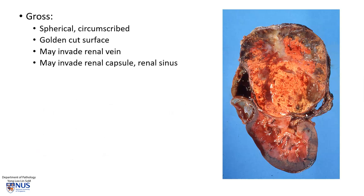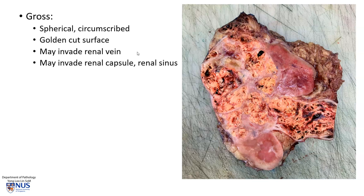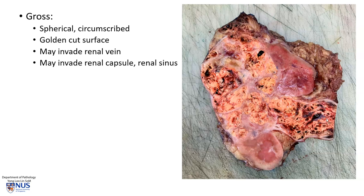Grossly, these tumors tend to be relatively well-circumscribed and rounded or spherical, and they have a very beautiful golden appearing cut surface. This correlates with the microscopic appearance we saw earlier because these cells are full of lipid, hence giving rise to this golden appearance. The tumors also have a propensity to invade into the renal vein — here is an example where we can see this golden yellowish tumor actually crawling into the renal vein — and these tumors can grow all the way into the inferior vena cava. The extent of propagation in these large vessels is important in staging.